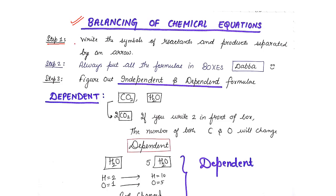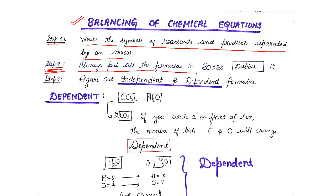For the first step, write the symbols of reactants and products separated by an arrow — which we have already done. The second step, which is not mandatory but very helpful, is to put all the formulas in boxes to avoid mistakes. The third step is to figure out what are the independent and dependent formulas. Let me explain what we mean by dependent and independent formulas, as this balancing approach has worked for almost all equations.